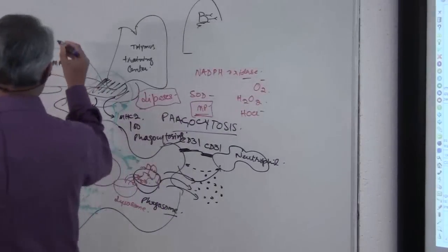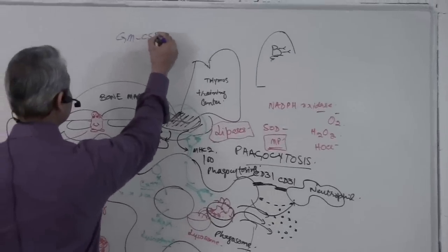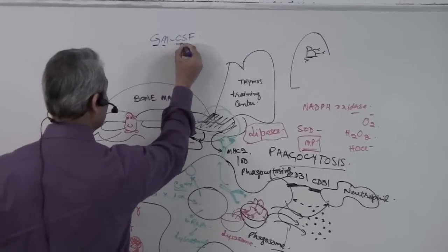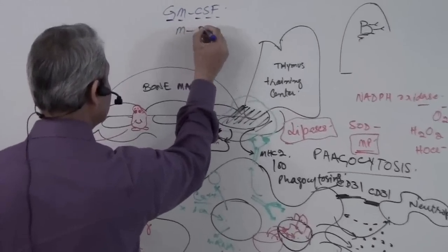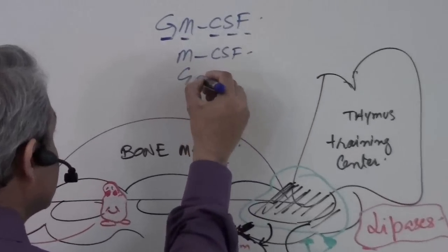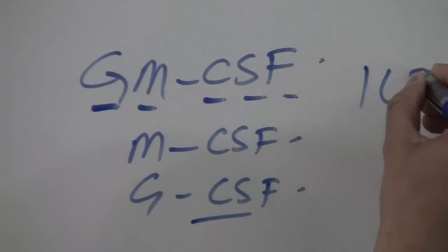So let me just quickly write them here. GM-CSF, granulocyte, monocyte, colony stimulating factors. Monocyte, colony stimulating factors. Granulocyte, colony stimulating factors. IL-3.